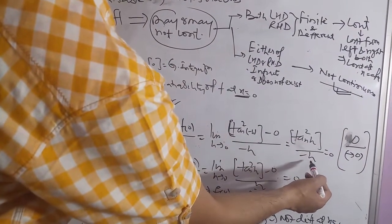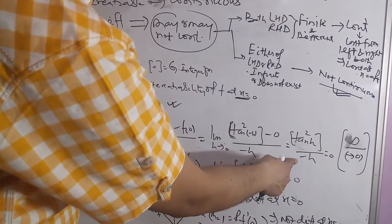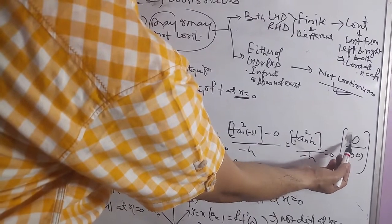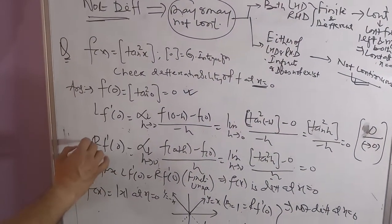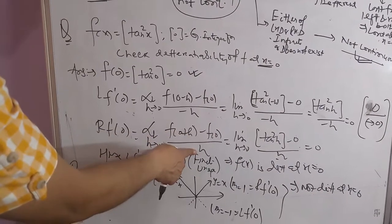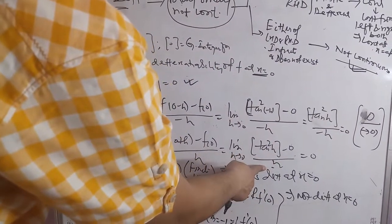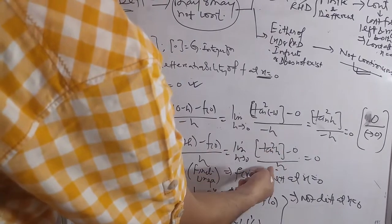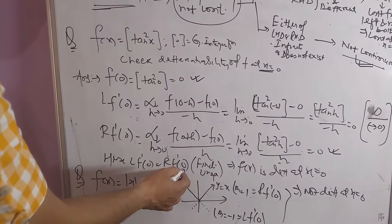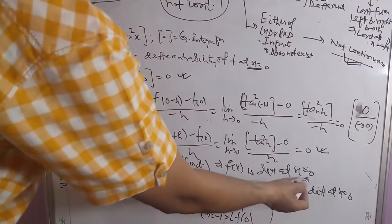This gives limit h tends to 0 of [integral part of tan²(minus h) minus 0] upon [minus h]. Since tan²(h) tends to 0, the integral part is exactly 0, so this is exact 0 divided by a non-zero quantity, giving 0. Similarly, using the right-hand derivative formula, we get 0. So LF'(0) equals RF'(0), both finite and unique, and the function is differentiable at x equal to 0.